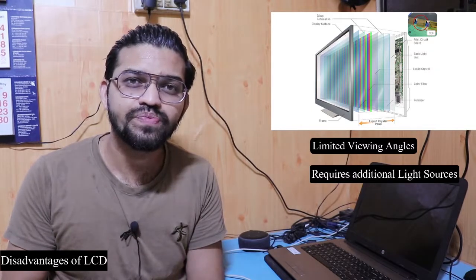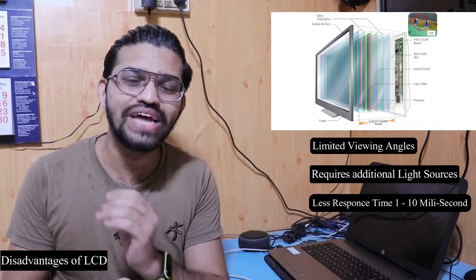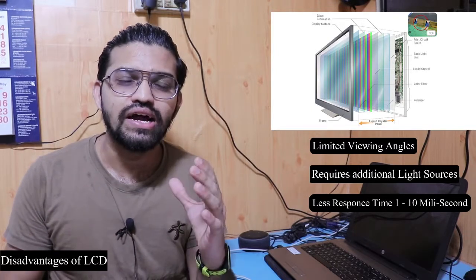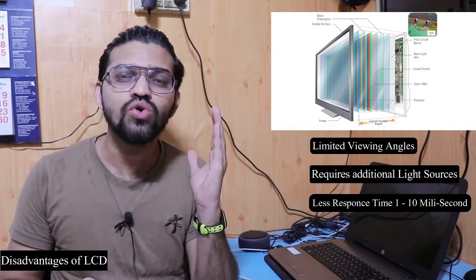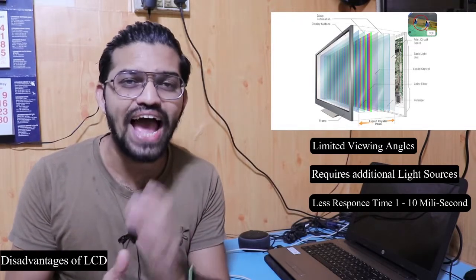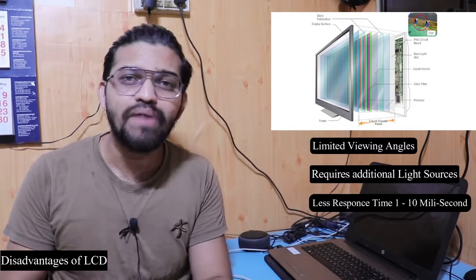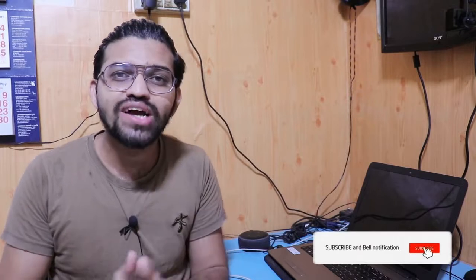Another disadvantage is that the response time is quite low, around 1 to 10 milliseconds, which is slower compared to OLED and LED displays. LCDs also have relatively low reliability. So those are the main disadvantages of LCD panels. Hopefully today's topic on how LCDs work is now clear. If you have any questions, comment below, and please subscribe to Engineers Academy. Thank you for watching — stay tuned for more educational videos.